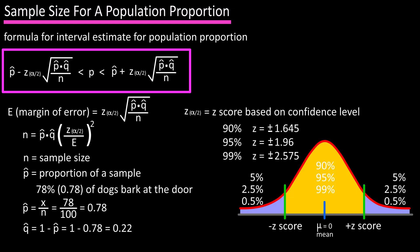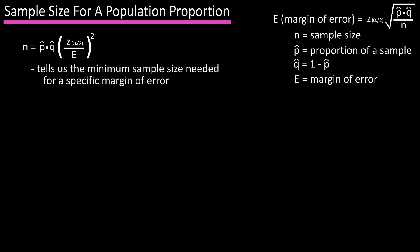z alpha over 2 is a z score based on the confidence level we're using, which is usually 90 percent, 95 percent, or 99 percent. I have the z values listed for those percentages. Big E is the margin of error. Now we have a formula that tells us the minimum sample size needed for a desired margin of error.